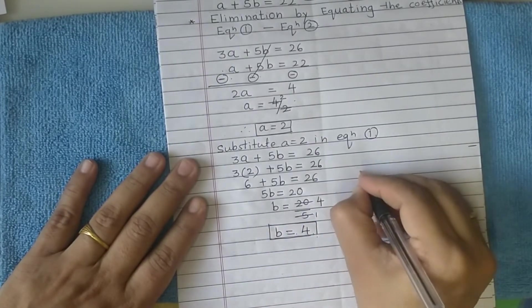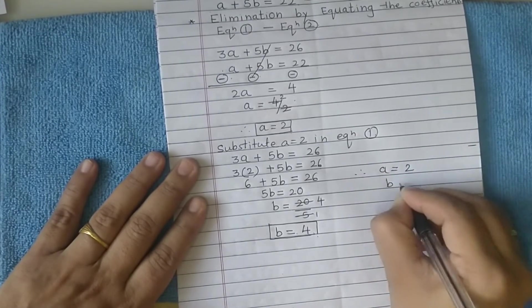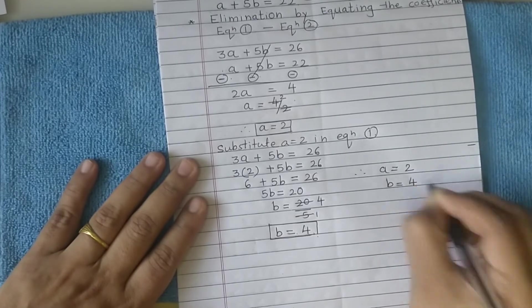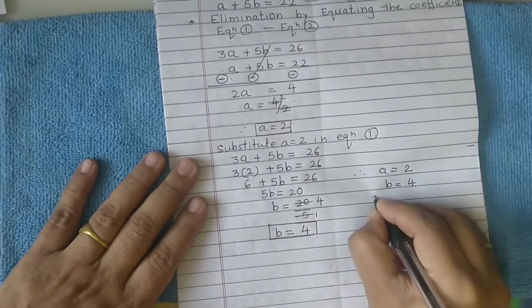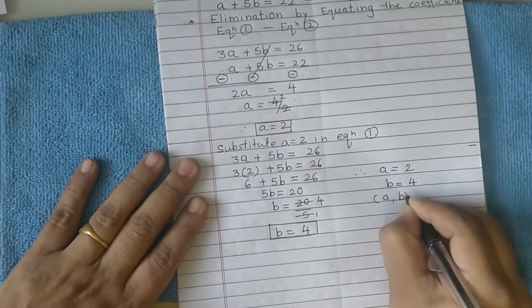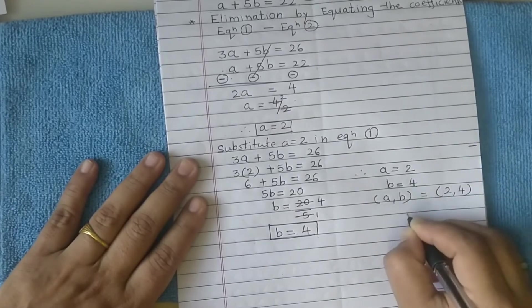So b equals 4. Thus we have found a equals 2, b equals 4. This is the solution. Or you can also write it as an ordered pair: solution set can be written as (a, b) equals (2, 4).